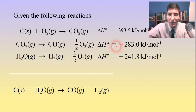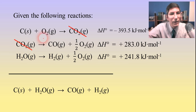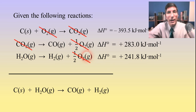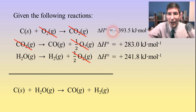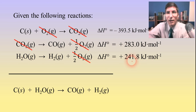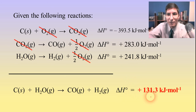Now everything adds up correctly. There's a carbon dioxide that cancels on both sides, and an oxygen on the left that cancels with half plus half on the right. Everything adds up to give carbon plus water vapor yields carbon monoxide plus hydrogen. Adding up the individual delta H's, the overall delta H is positive 131.3 kilojoules per mole.